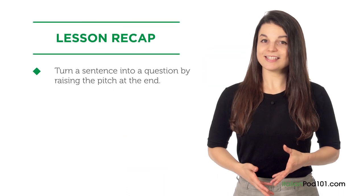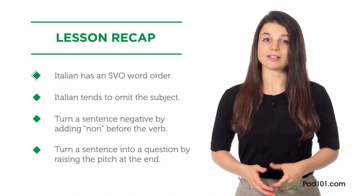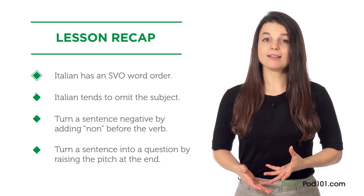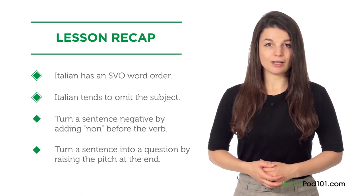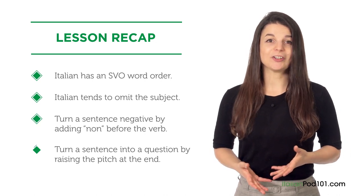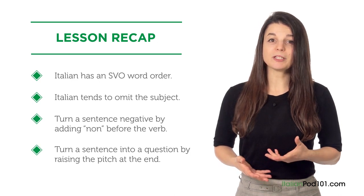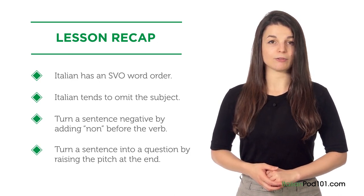Well done! We've covered a lot of things in this lesson, so let's recap. You learned that Italian sentences can be formed using subject, verb, object — or SVO word order. Italian tends to omit the subject if that subject is a pronoun. You make a sentence negative by adding 'non' before the verb. To turn a sentence into a question, simply raise your pitch at the end. And if you want to be more specific, just add a question word at the beginning.